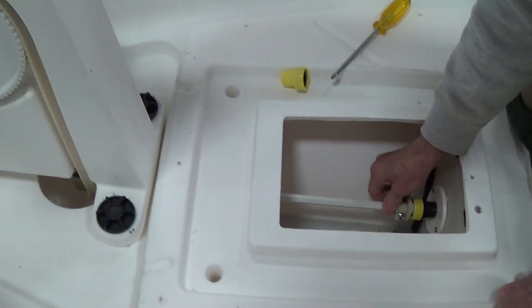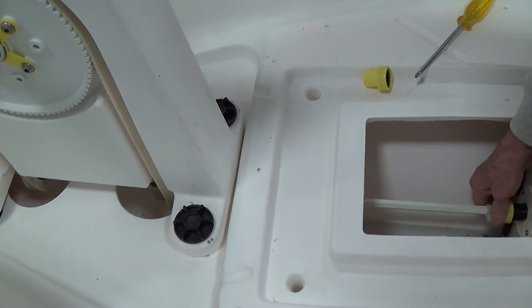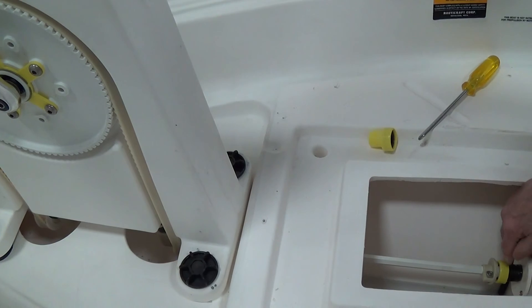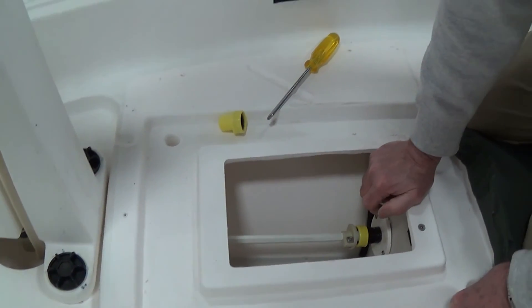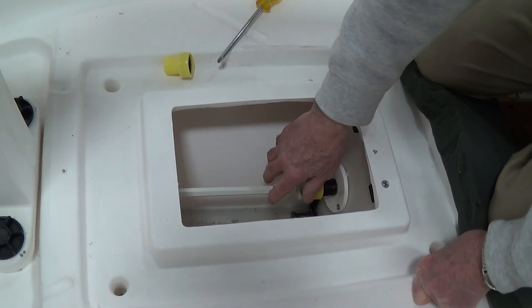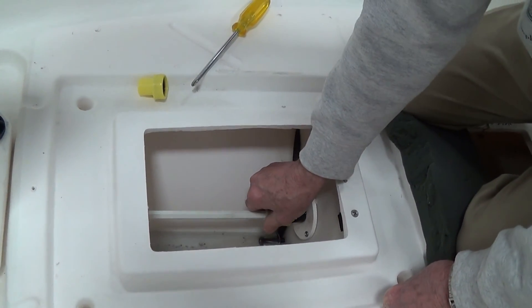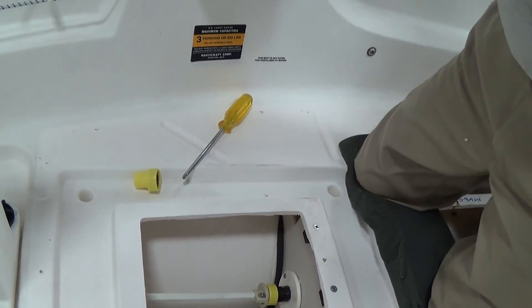That's how you replace the drive shaft, or replace the seal and seal bushing in the escapade boat with the old hexagonal fiberglass drive shaft. That's it.